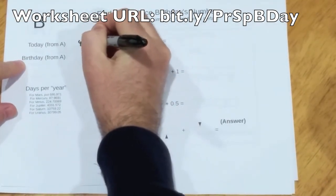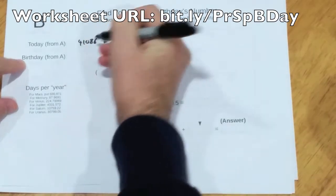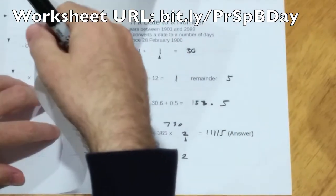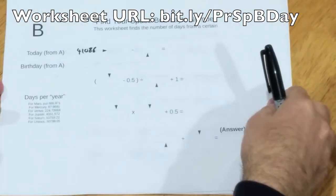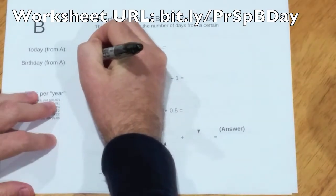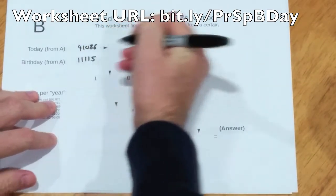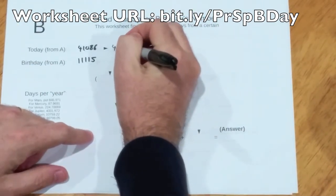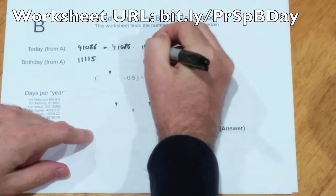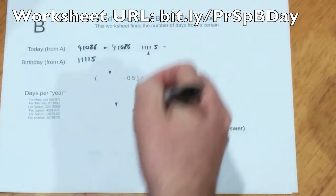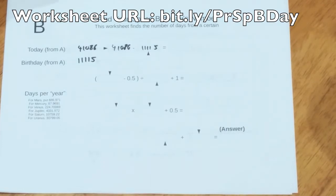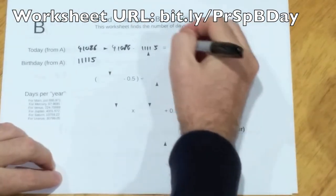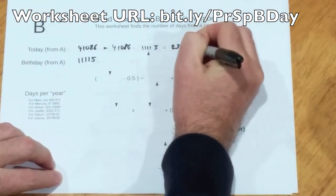So, 41086 from today, even though it's not actually today, he didn't die today, he died in 2012. And his birthday, the number for his birthday was 11115. Now, unsurprisingly, the very first thing you do in Worksheet B is subtract these two numbers.